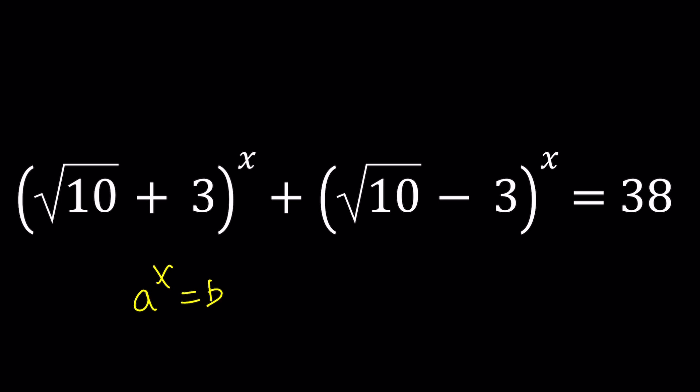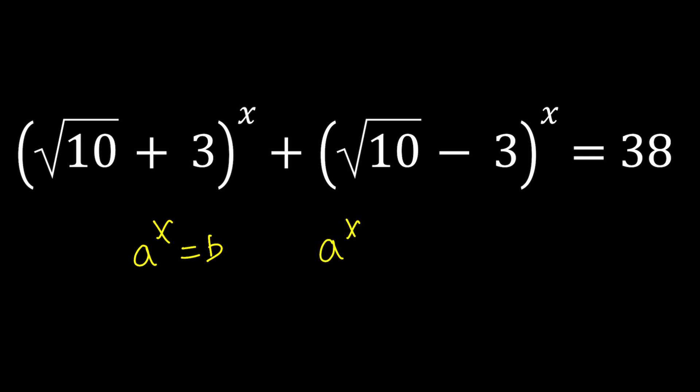But what if you have two different bases like a to the power x and b to the power x, even though the exponents are the same, the bases are different and we get their sum. So on the right hand side, it's just going to be a constant, let's call that c. How do you solve an equation like this? A to the x plus b to the x equals c. Well, if a and b are related...